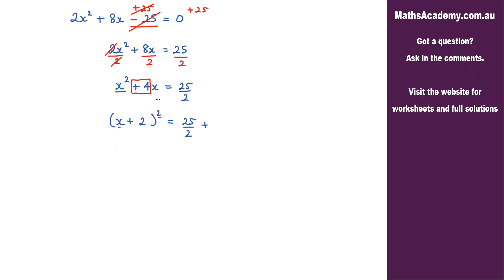Now I do the same thing to the right hand side. I take that coefficient which is 4 and divide it by 2, which will give me 2, but I need to square it. So 2².